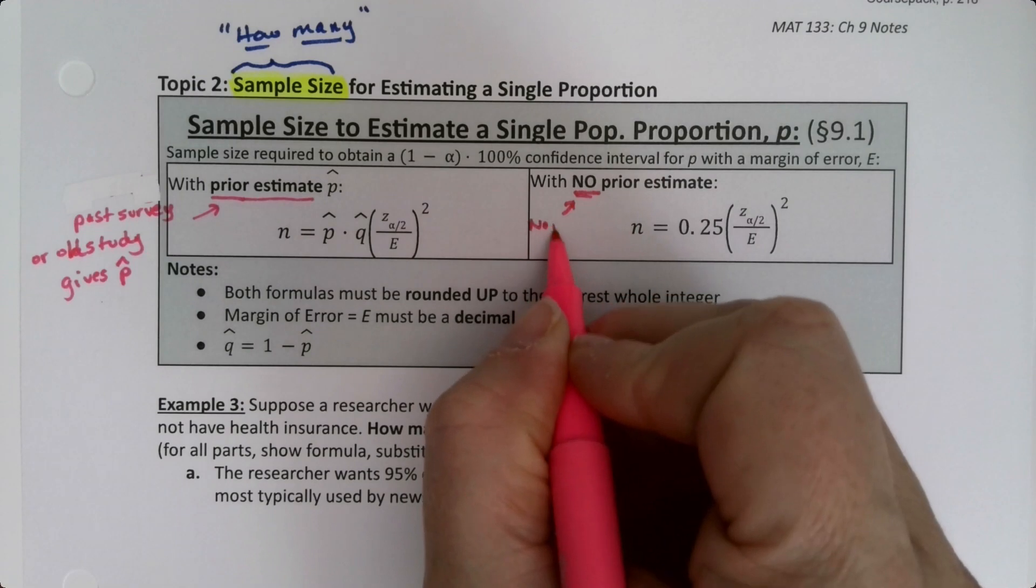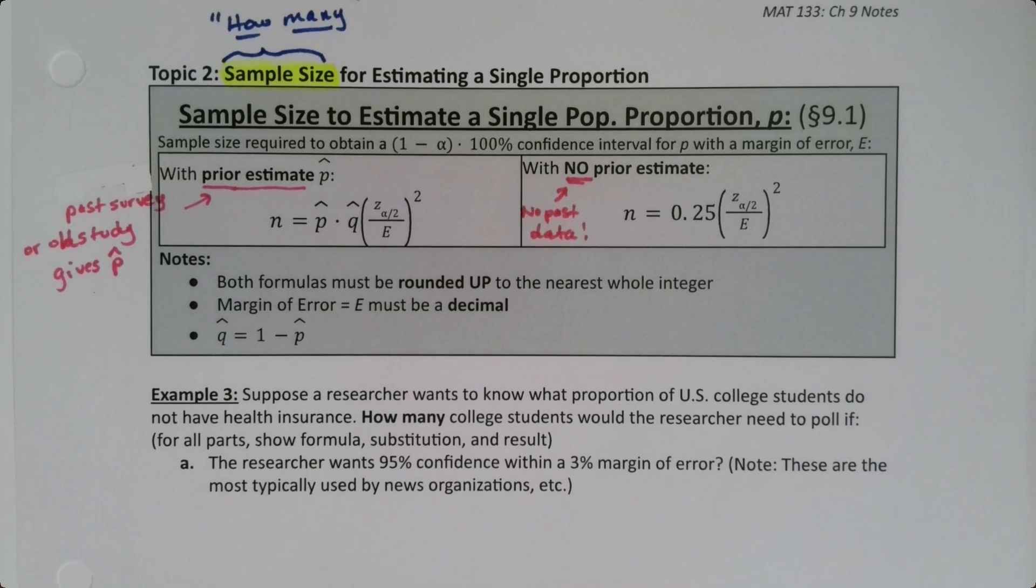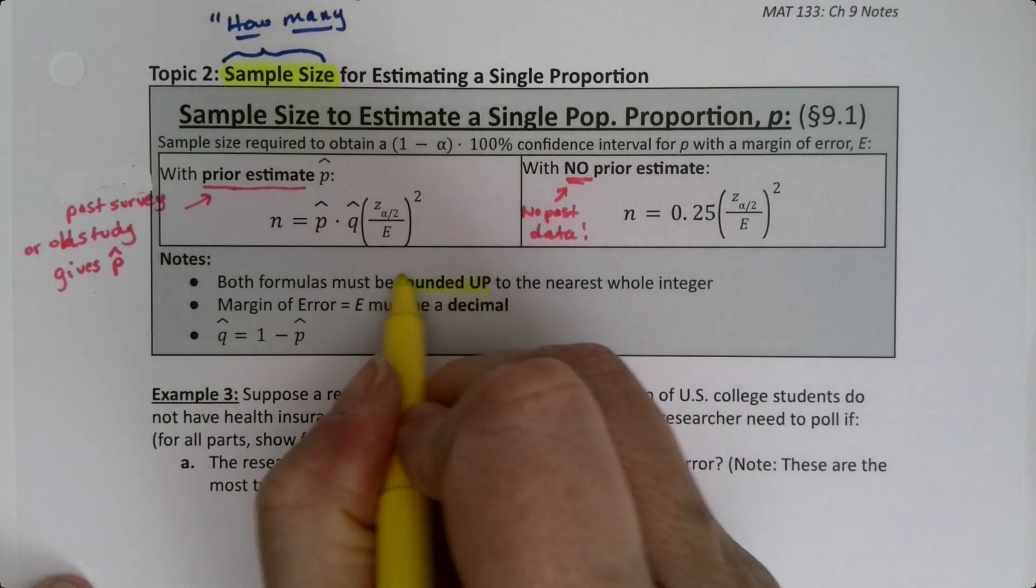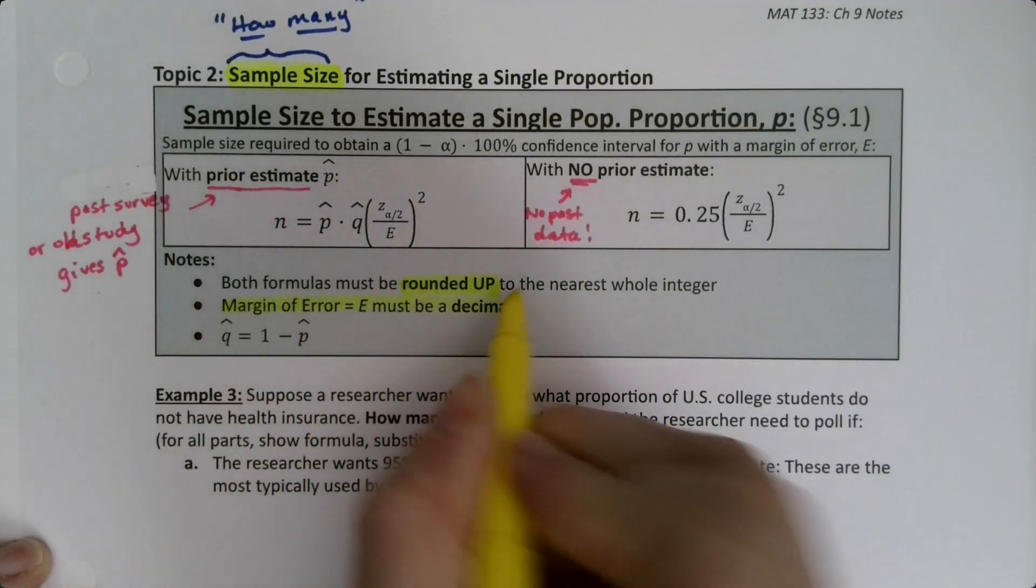There's a couple other things to note: when we find our answer, we're going to have to round up. Through the entire course we've just done regular rounding, but this particular item, sample size, will all be rounded up no matter what.